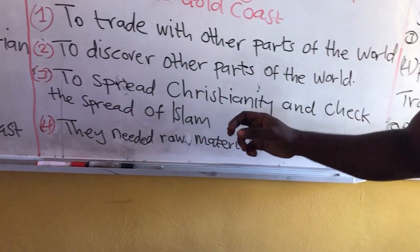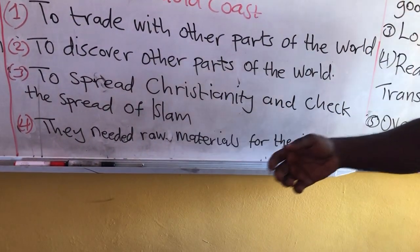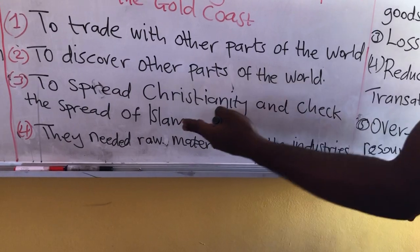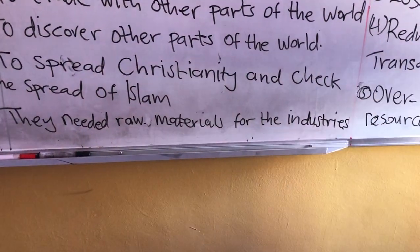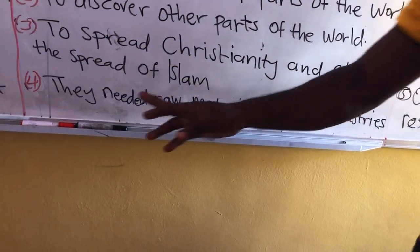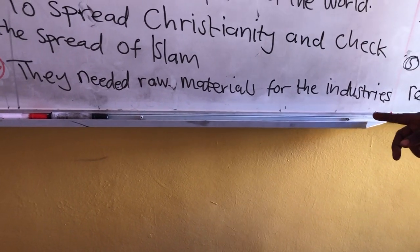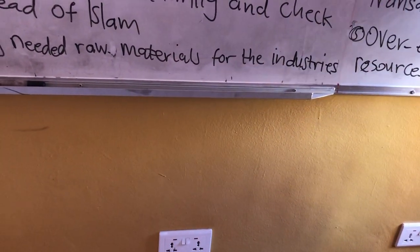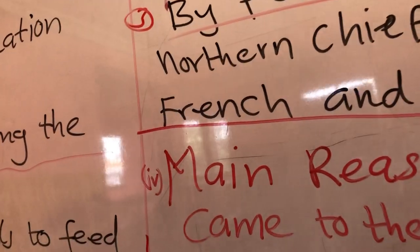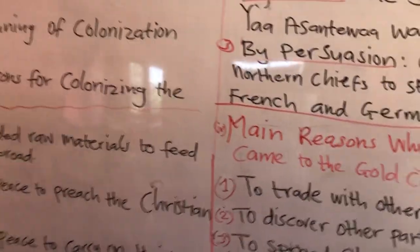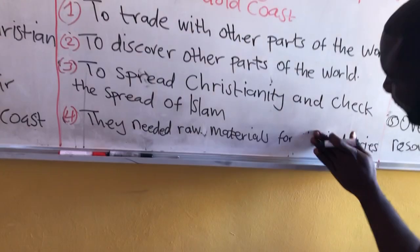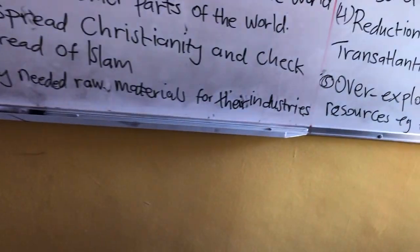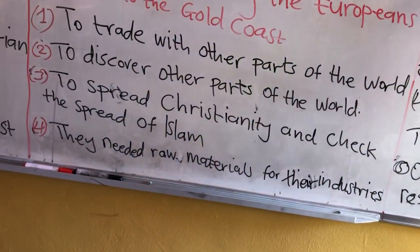The third reason the Europeans came to the Gold Coast was to spread Christianity and check the spread of Islam. They wanted to spread the gospel and also ensure Islam did not spread unchecked. The fourth reason was that they needed raw materials for their industries. Africa at that time had so many resources — timber and gold — and we didn't even know how to fully use them. They took advantage and were extracting our raw materials, like timber and gold, and taking them away to feed their own industries.